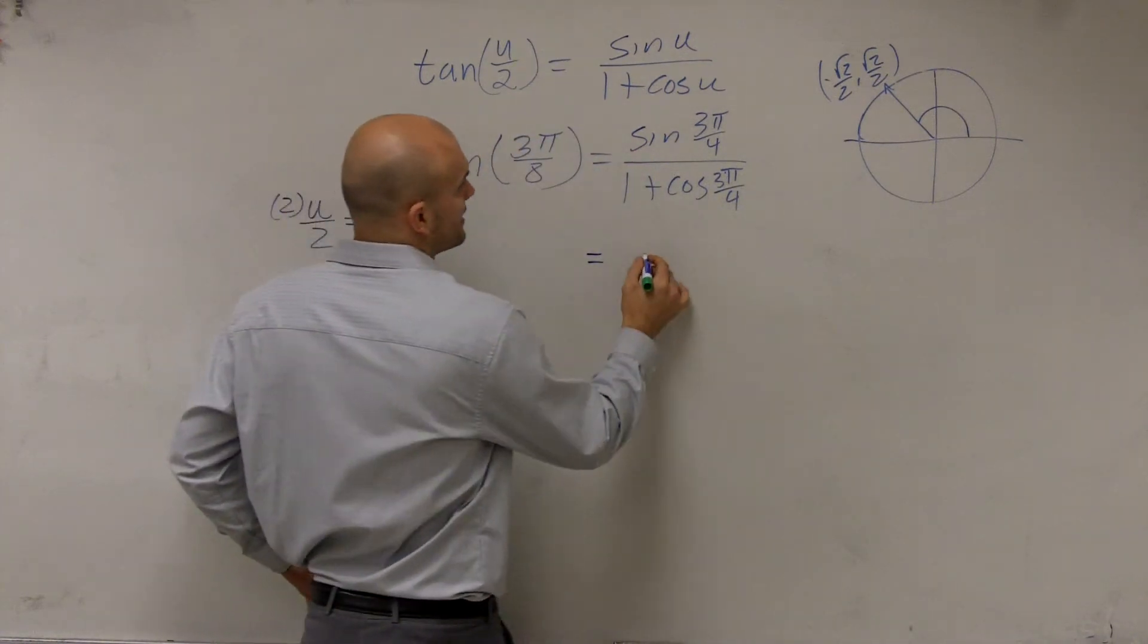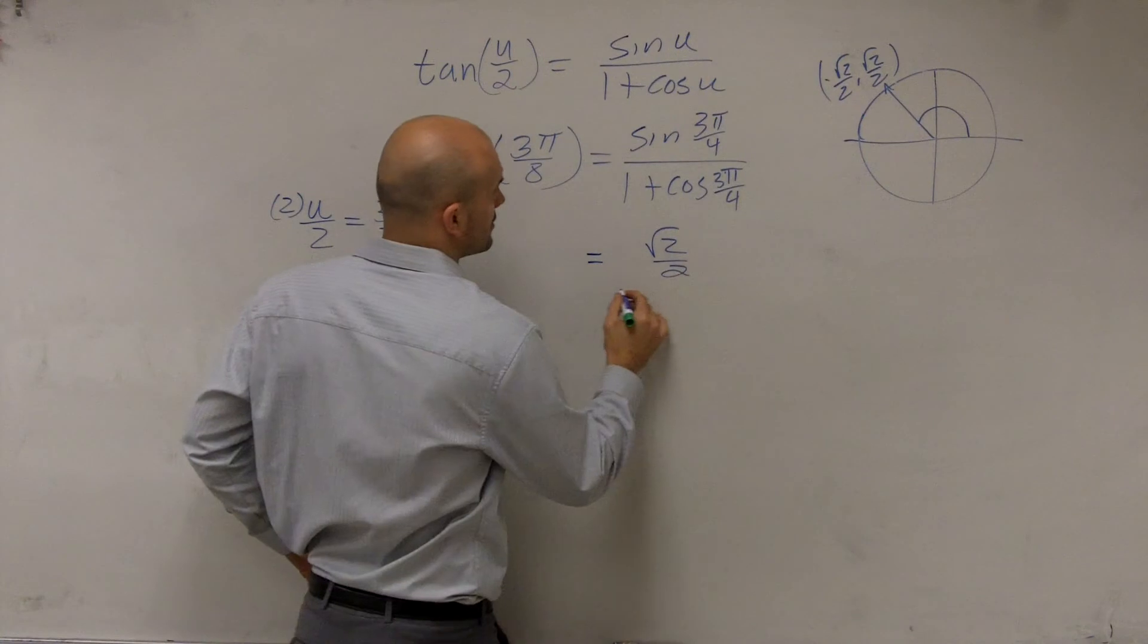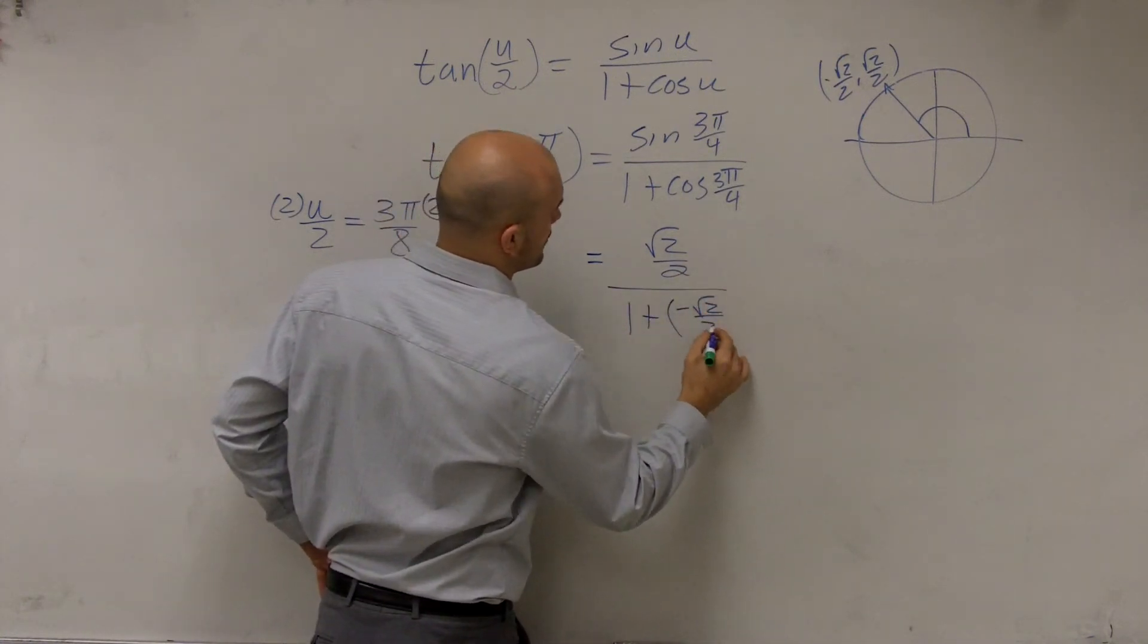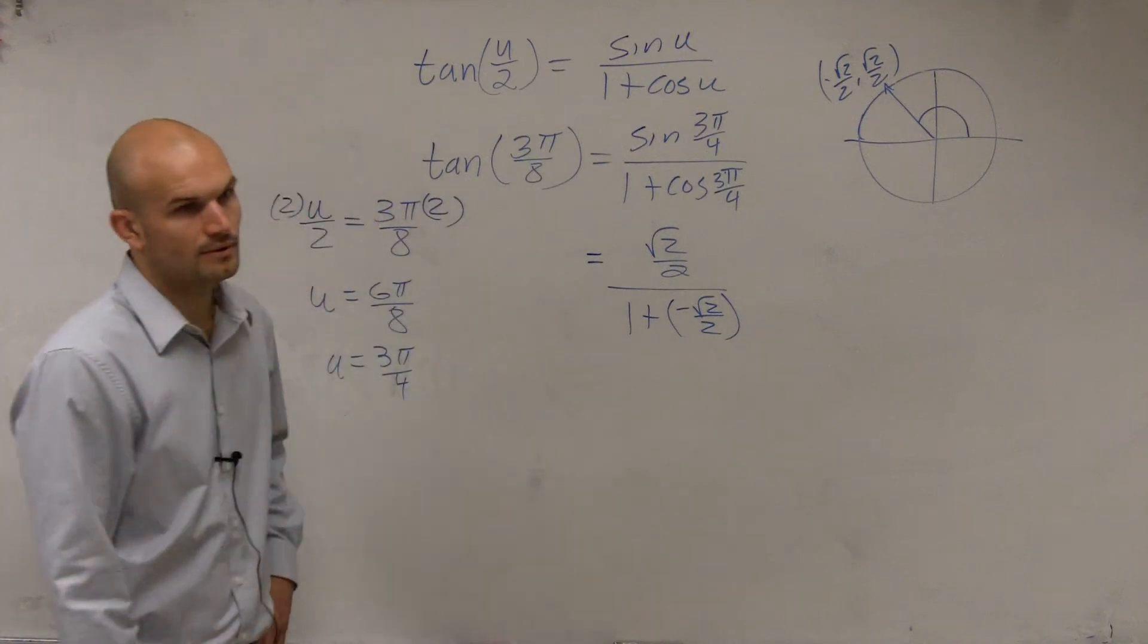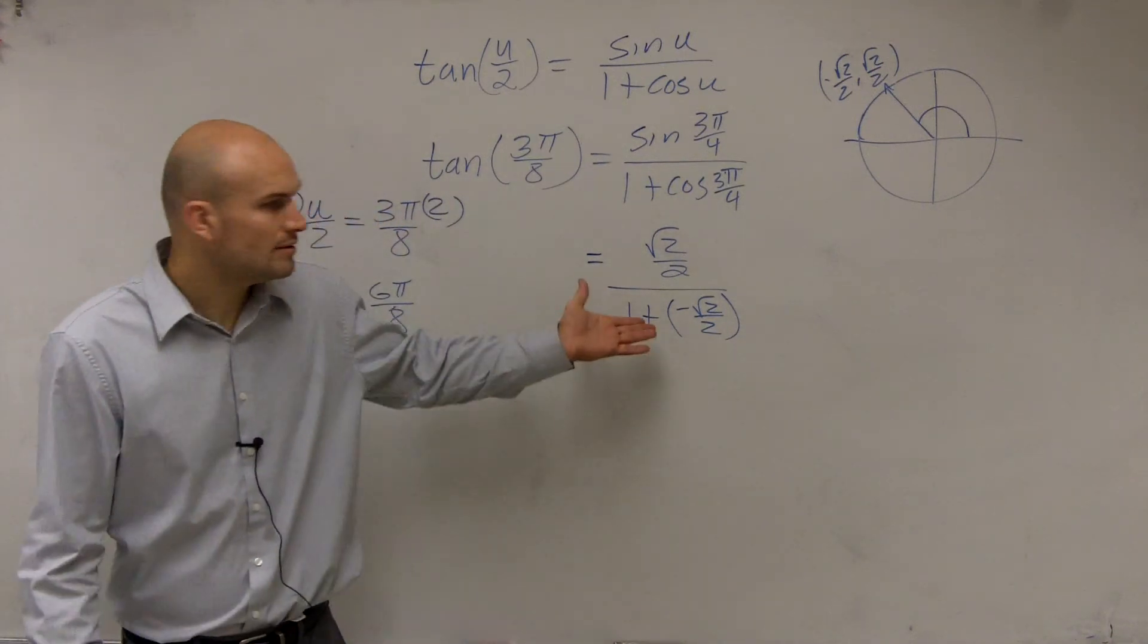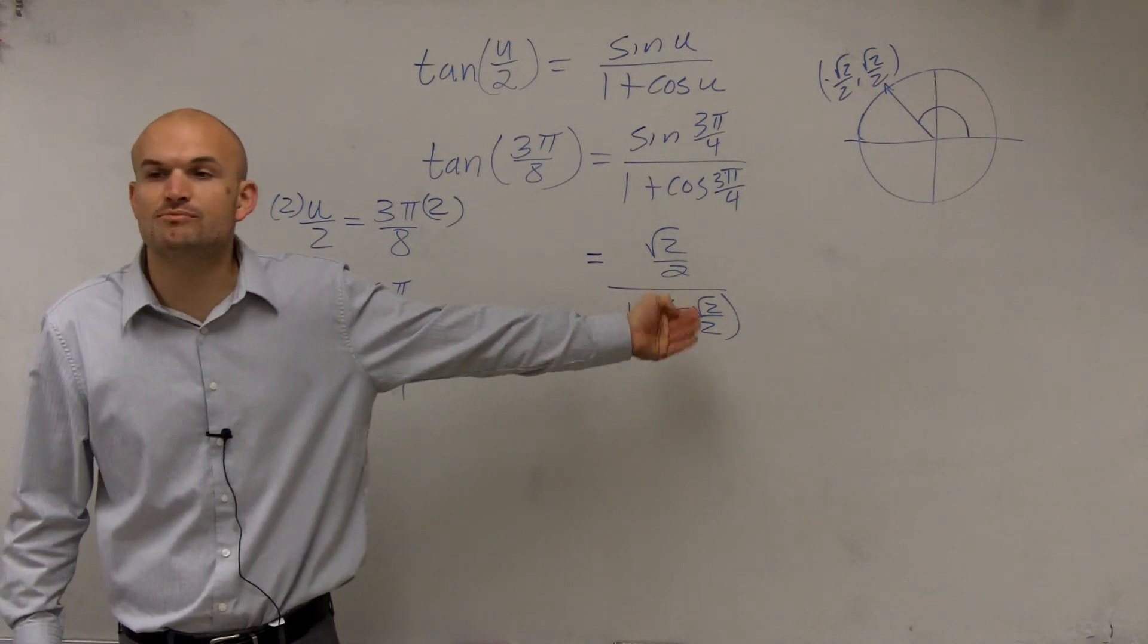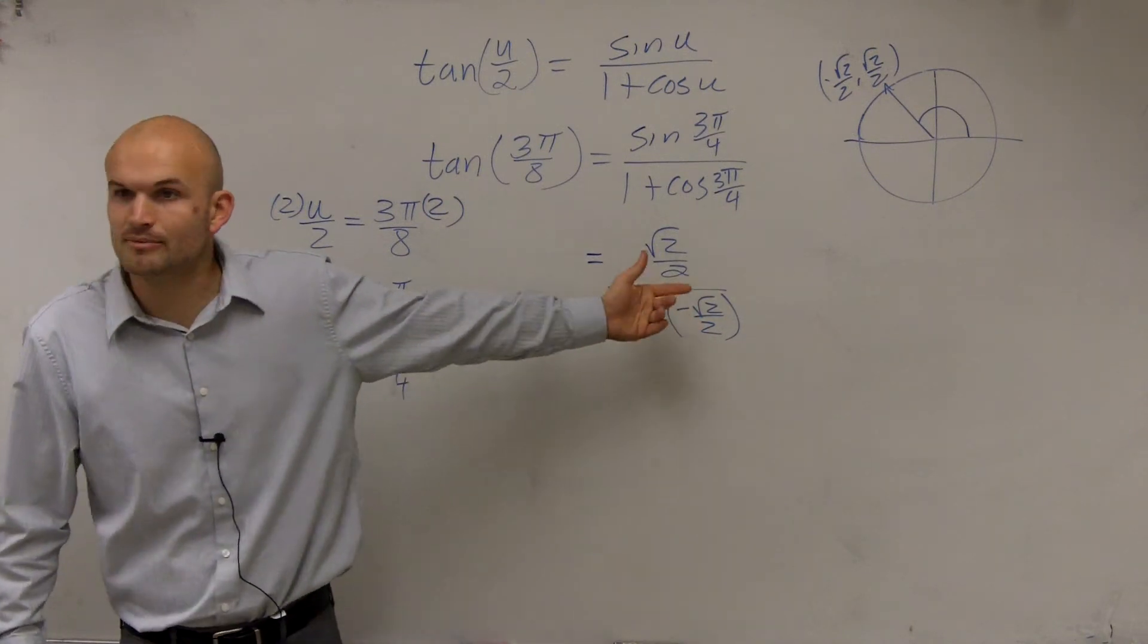So therefore, the sine is square root of 2 over 2 divided by 1 plus negative square root of 2 over 2. Then we hate having fractions on top and bottom, right? So we can get rid of the fractions as long as we multiply the top and denominator by 2 over 2.